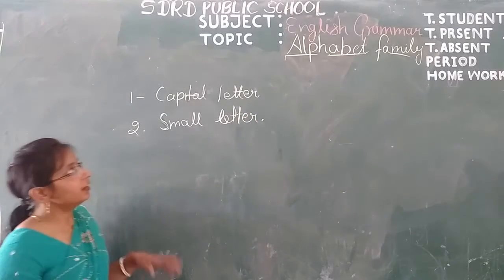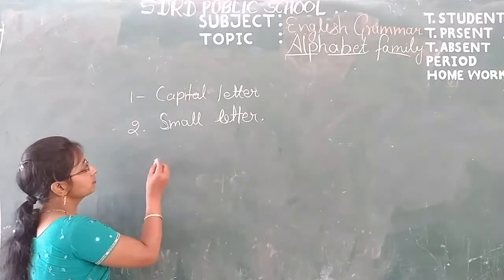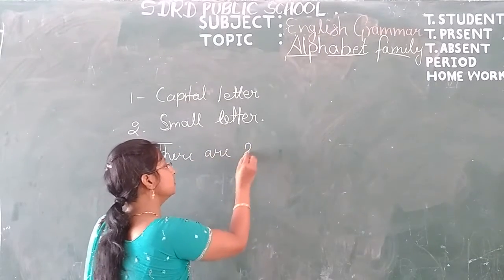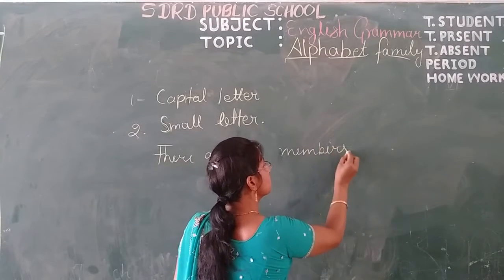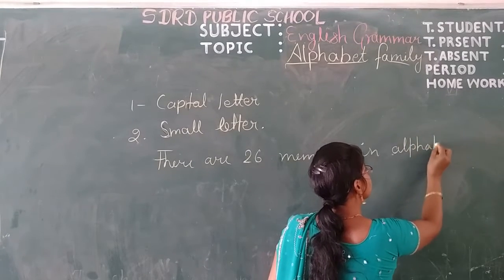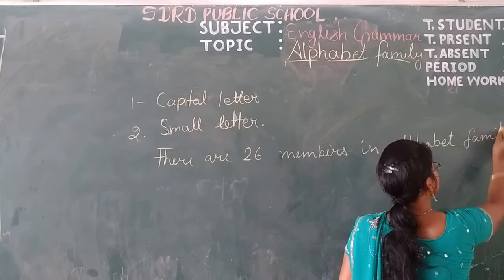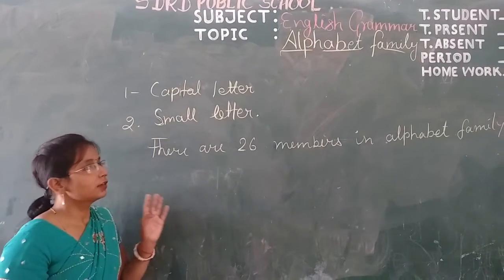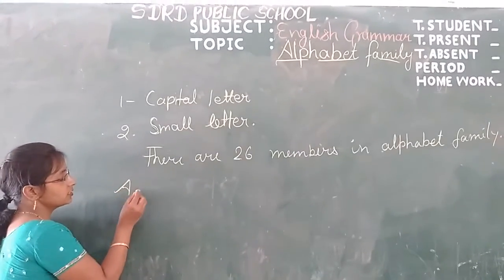There are 26 members in the alphabet family. Capital letters are always used as proper as we use.